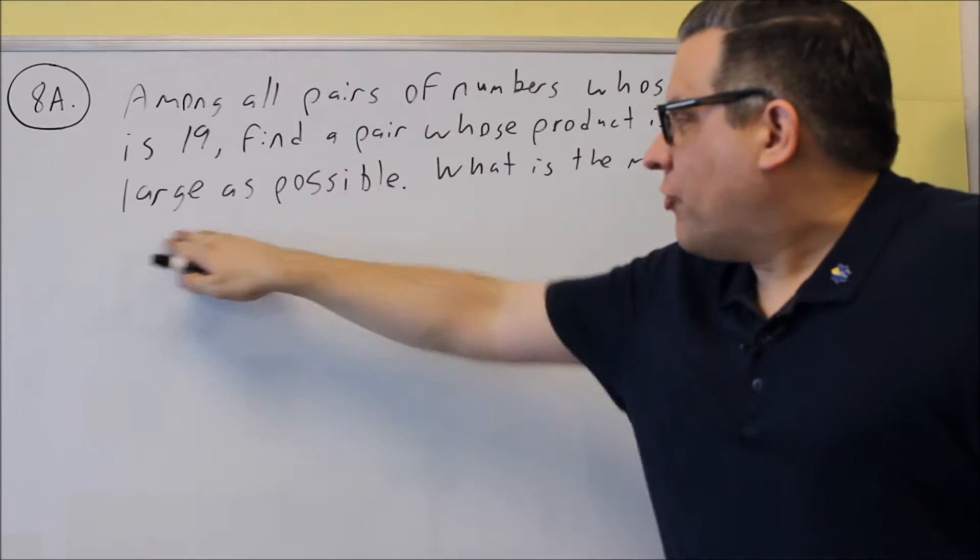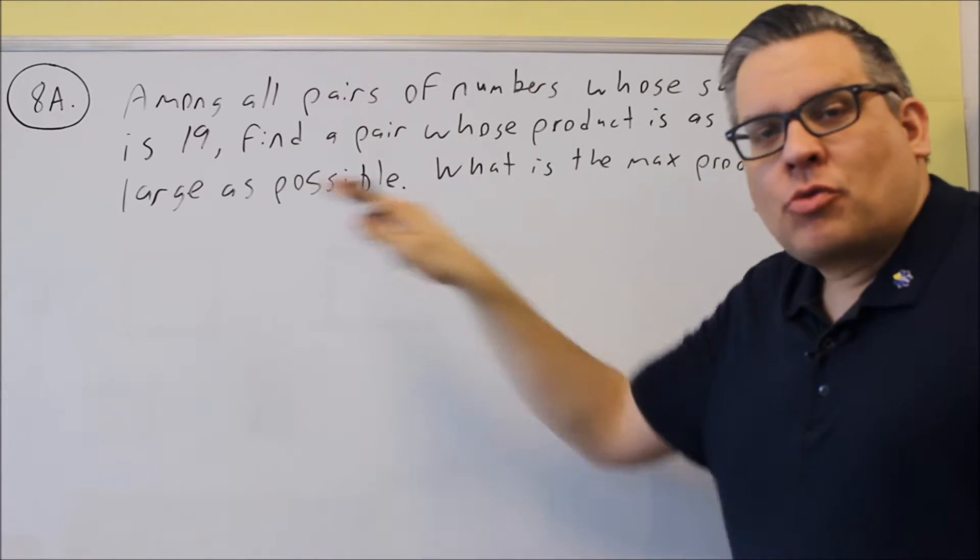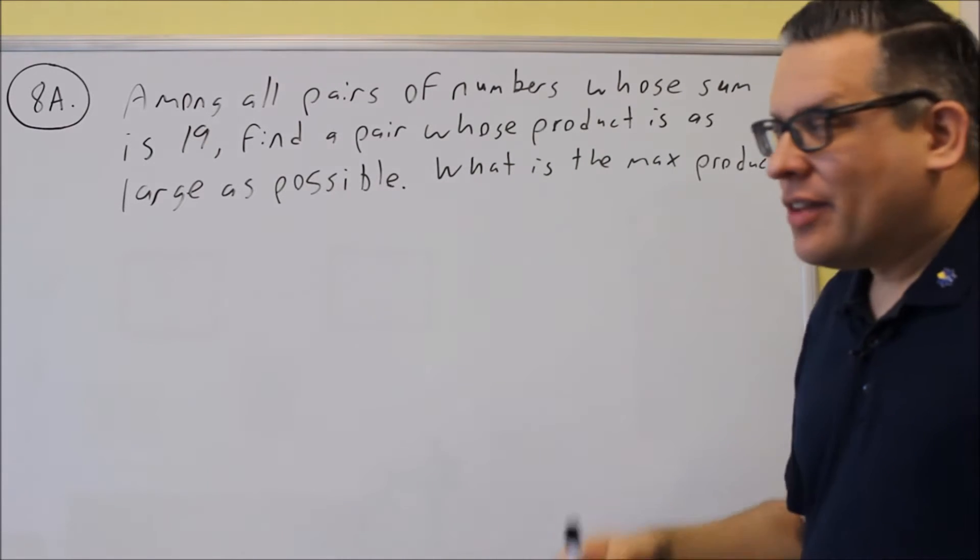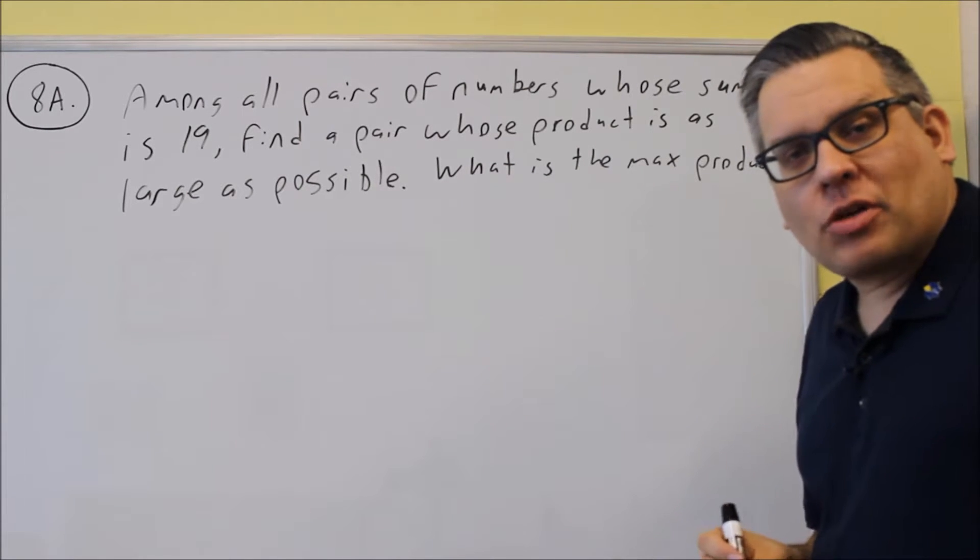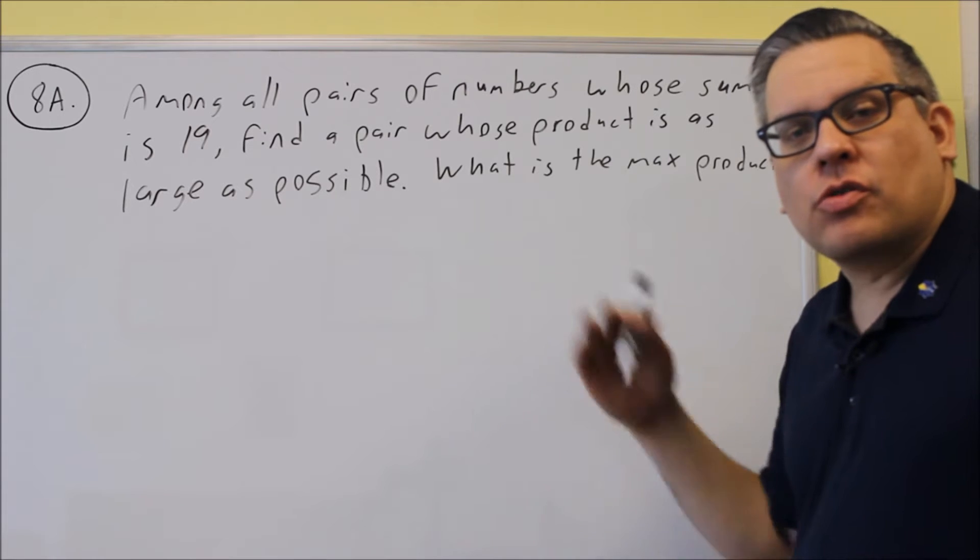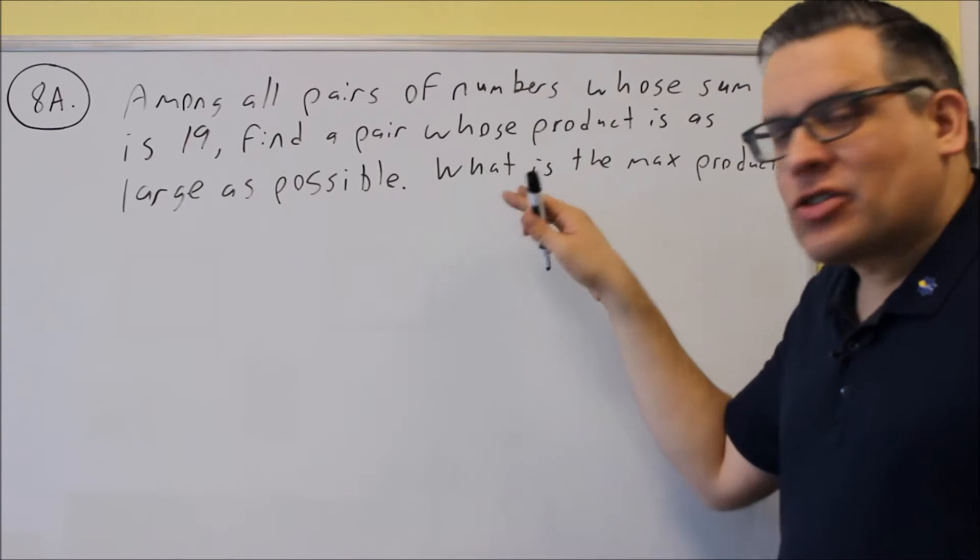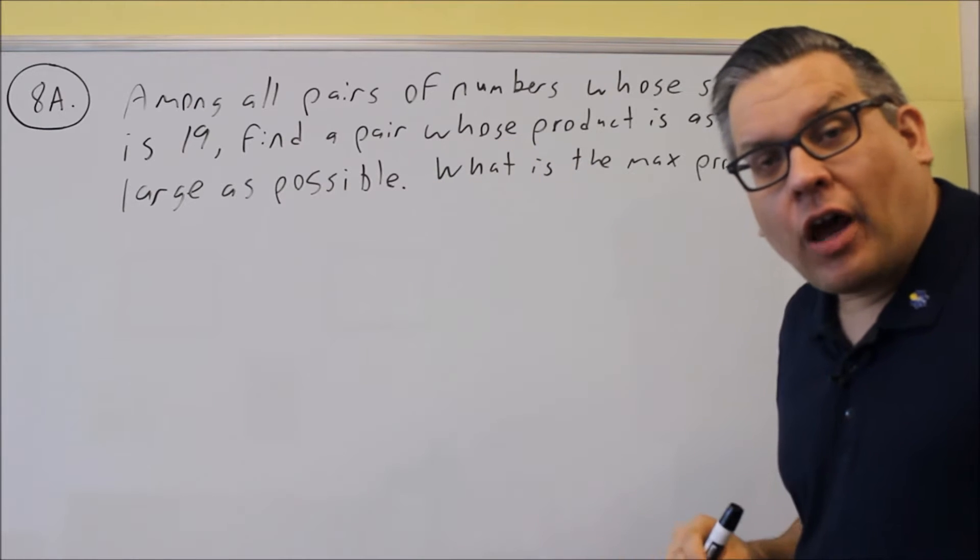Whenever you see a phrase like largest possible, smallest possible, maximum, minimum, that means that you're going to have to come up with some kind of quadratic equation and then you're going to use the vertex formula to get the answer because max and min of a parabola is always going to occur at a vertex.